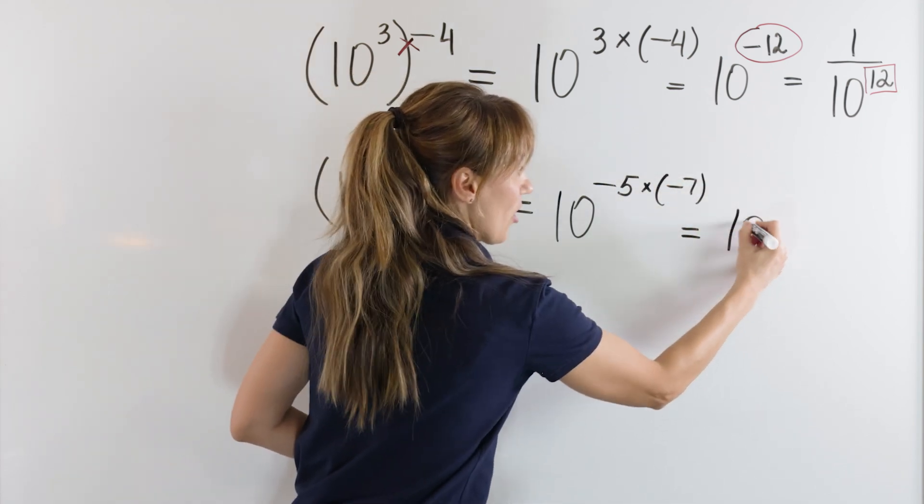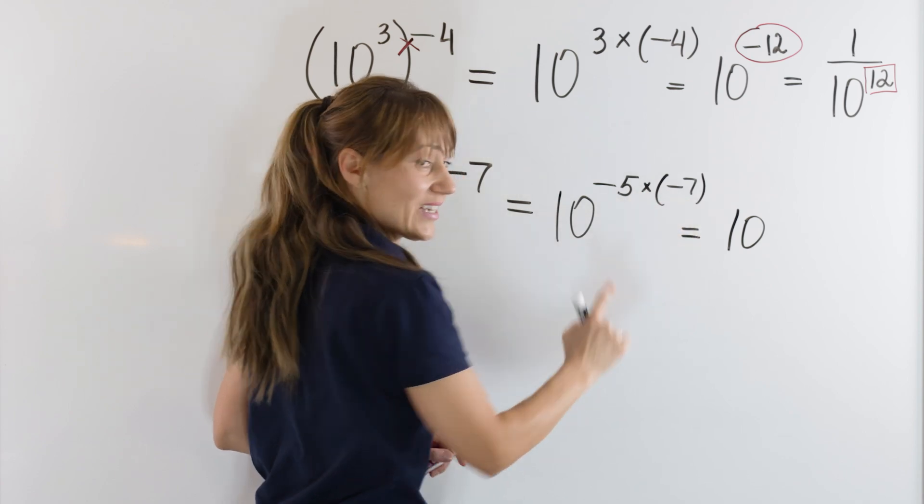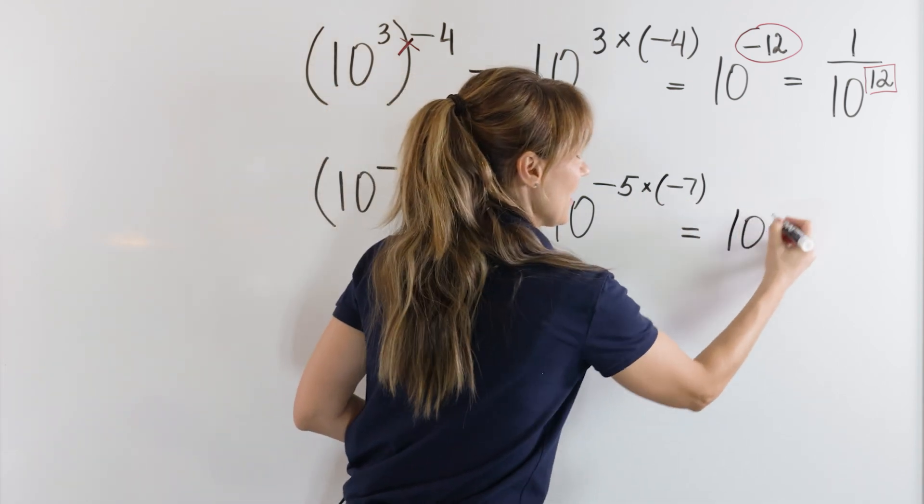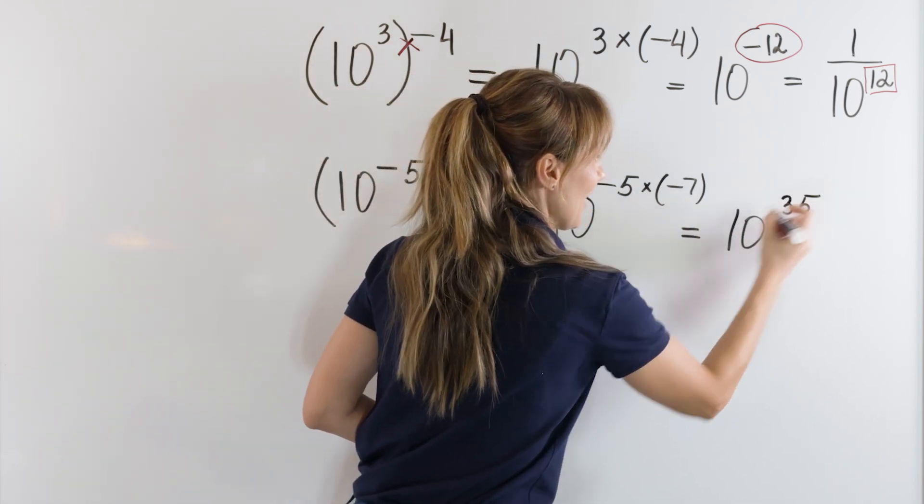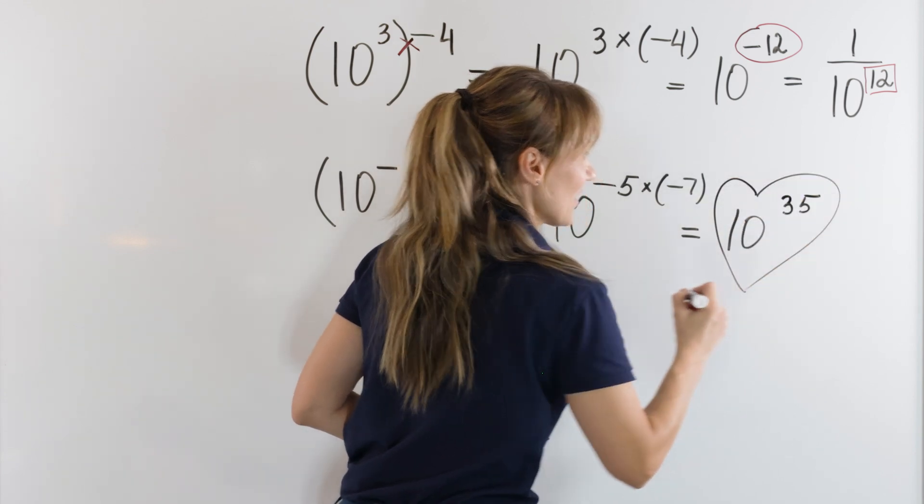10 to the power of negative times negative will give us positive. 10 to the power of 35. And we have a positive exponent. And let's love it.